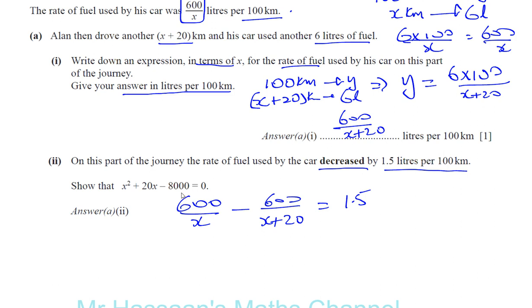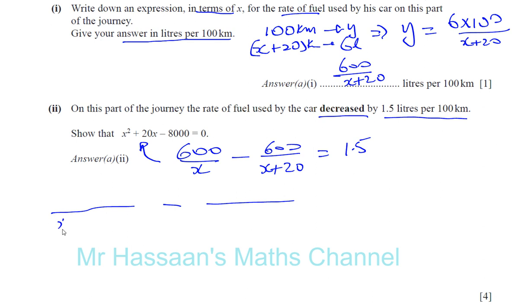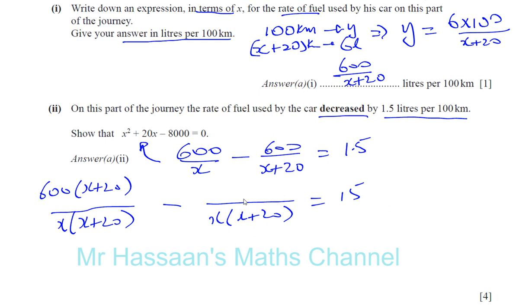I need to make this equation match the required form. I'll combine the left side into one fraction. To do that, I need a common denominator of X times (X plus 20). For the first fraction I multiply by (X plus 20), giving 600(X plus 20), and for the second I multiply by X, giving 600X.